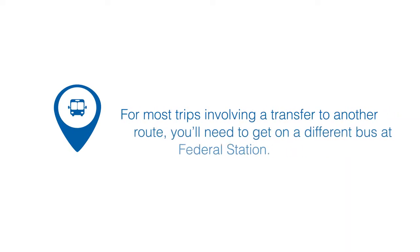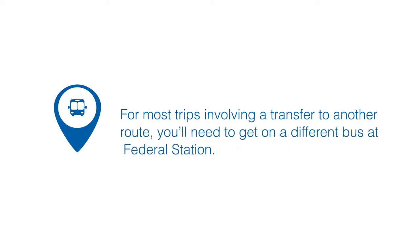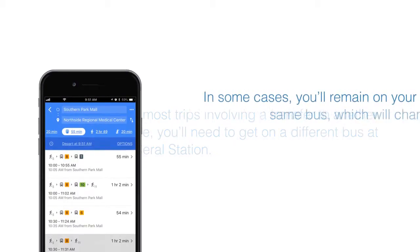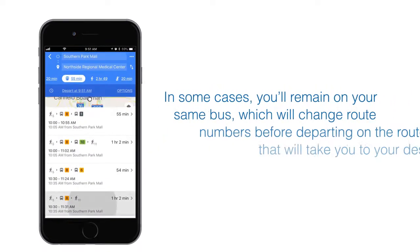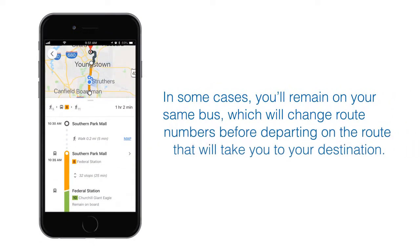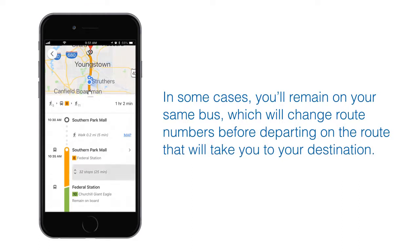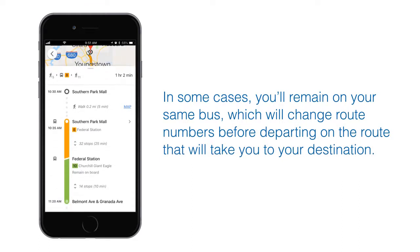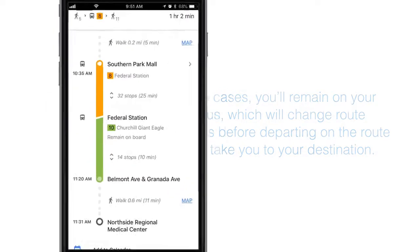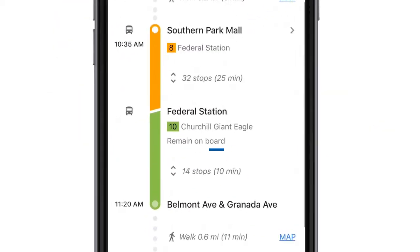For most trips involving a transfer to another route, you'll need to get on a different bus at Federal Station. But in some cases, you'll remain on your same bus, which will change route numbers before departing on the route that will take you to your destination. If that's the case, Trip Planner will tell you to remain on board your first bus.